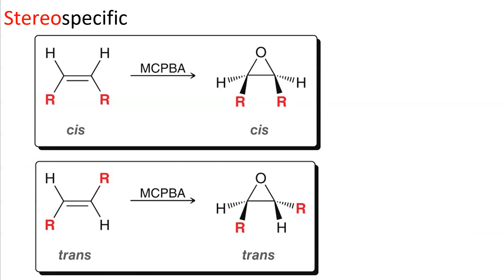Epoxidation is stereospecific. When you have an alkene, you have a bunch of atoms in the same plane — six atoms in the same plane — all of the atoms associated with that pi bond.